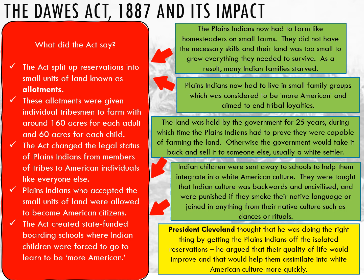The Act creates state-funded boarding schools where Indian children are forced to go to learn to be more American — that forced removal of the children. In the green on the slide, you can see analysis of how the Indians may have responded to some elements of the Dawes Act. They have to farm on small farms like the homesteaders, but they don't have the skills to farm — it's like setting them up to fail because they're warriors who don't know how to work a plow or build a sod house. It breaks up that community spirit — the survival of the tribe based on everybody doing their bit — broken down into small working units, so you don't have that support system anymore.